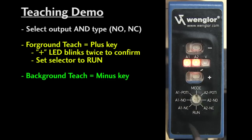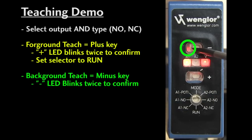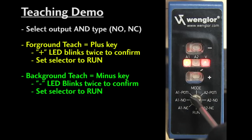To teach A2 on the background, just point the laser at the background and press the minus key. When the minus LED blinks twice, it's done. Set the selector back to run and now pin A2 will go active for any object it detects closer than the background.